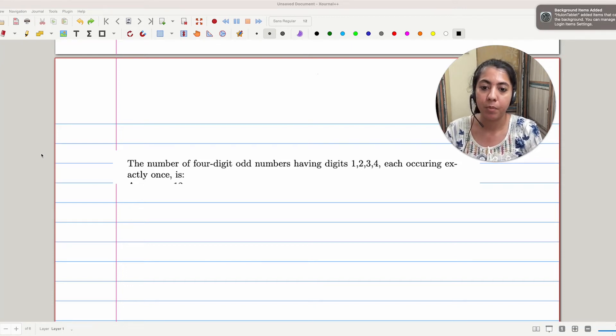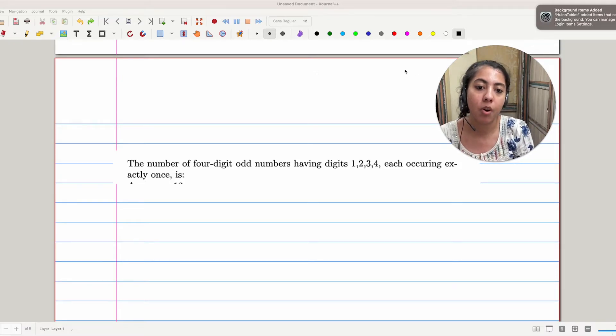Let's start with problem number 2. This is a basic question of combinatorics. Here we have to find the number of 4-digit numbers that we can create using the digits 1, 2, 3, and 4. There is one condition: we can use each digit exactly once.